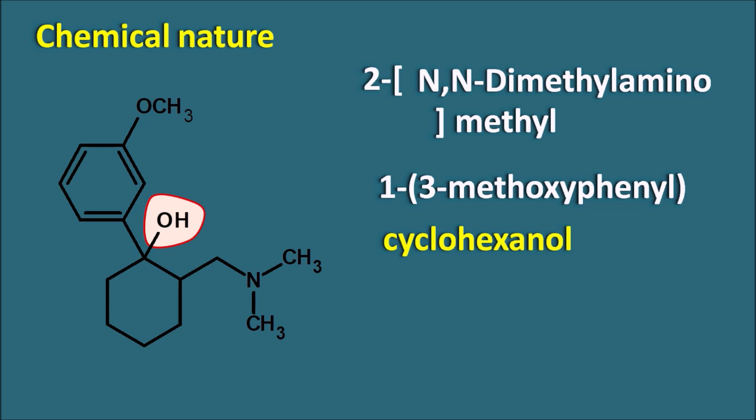When we compare this structure with morphine, just like morphine it also has a phenyl ring, a cyclohexane ring, and an alcoholic OH group. Because of this structural similarity, tramadol also acts as an opioid agonist and therefore produces central analgesia.